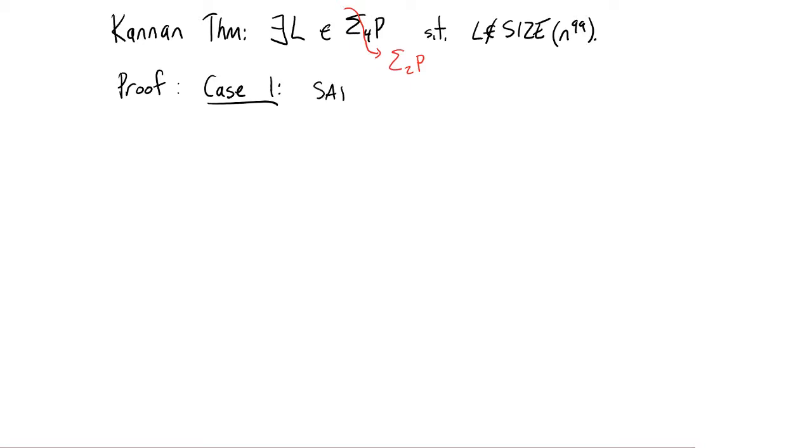Case one is that SAT is not in P slash poly, which is probably true, by the way. So why are we done in case one? Well, in case one, we're sort of very done. In this case, SAT, well, of course, it's in NP.